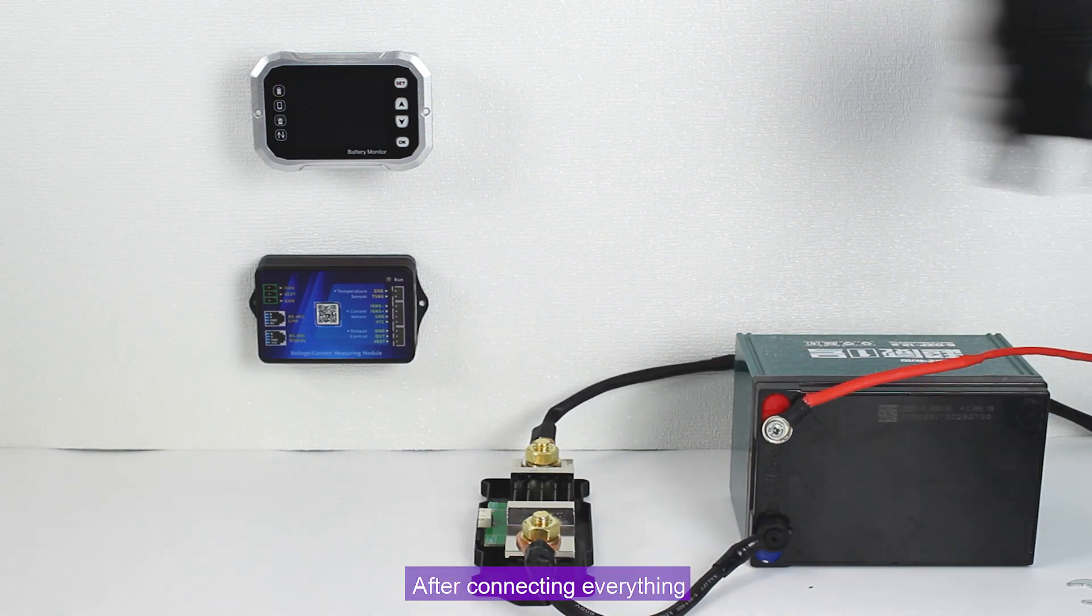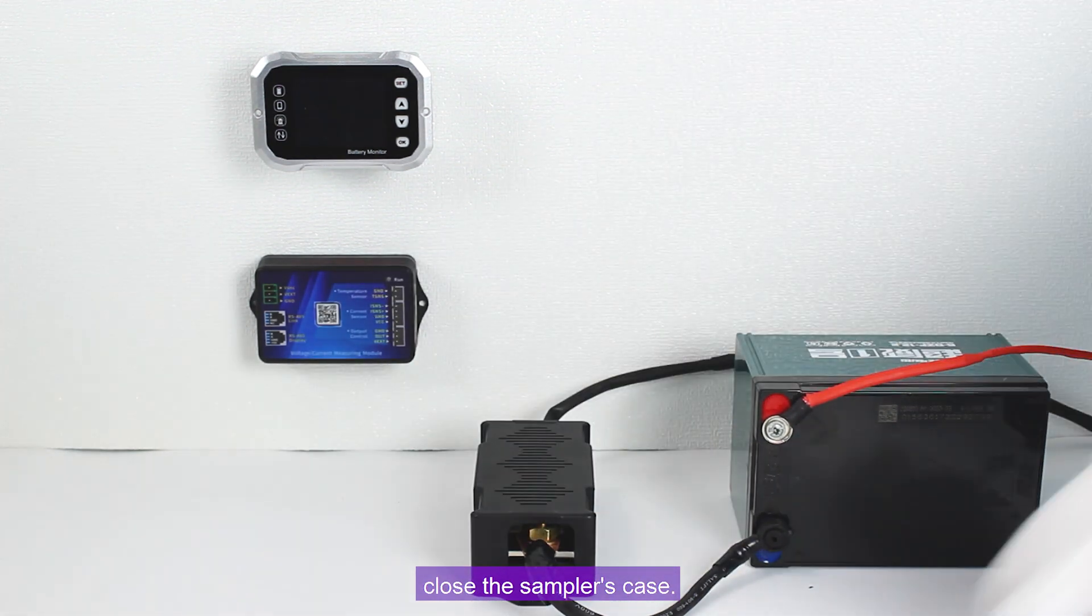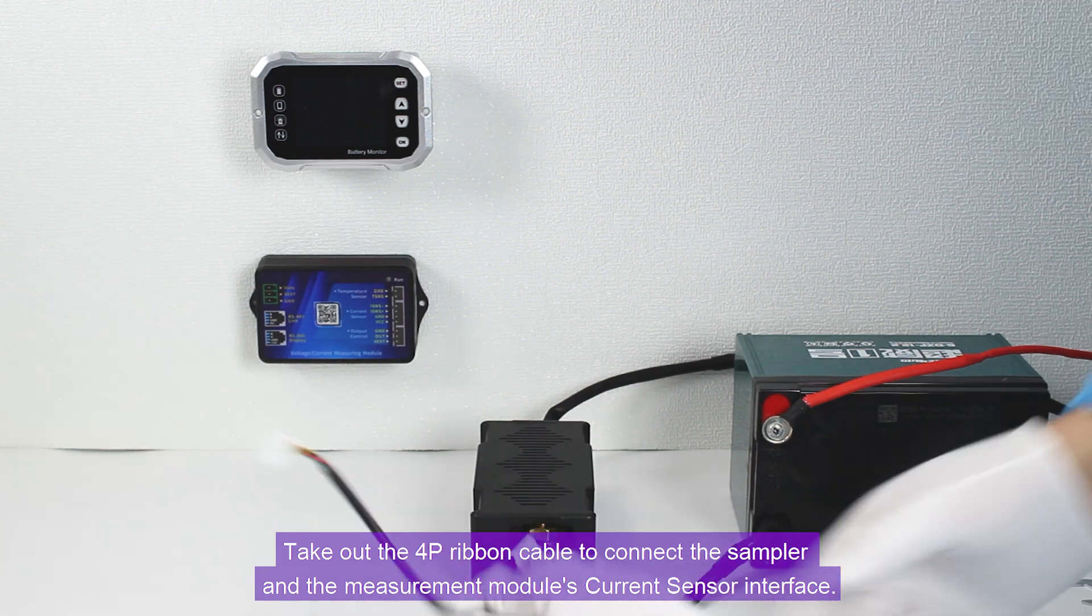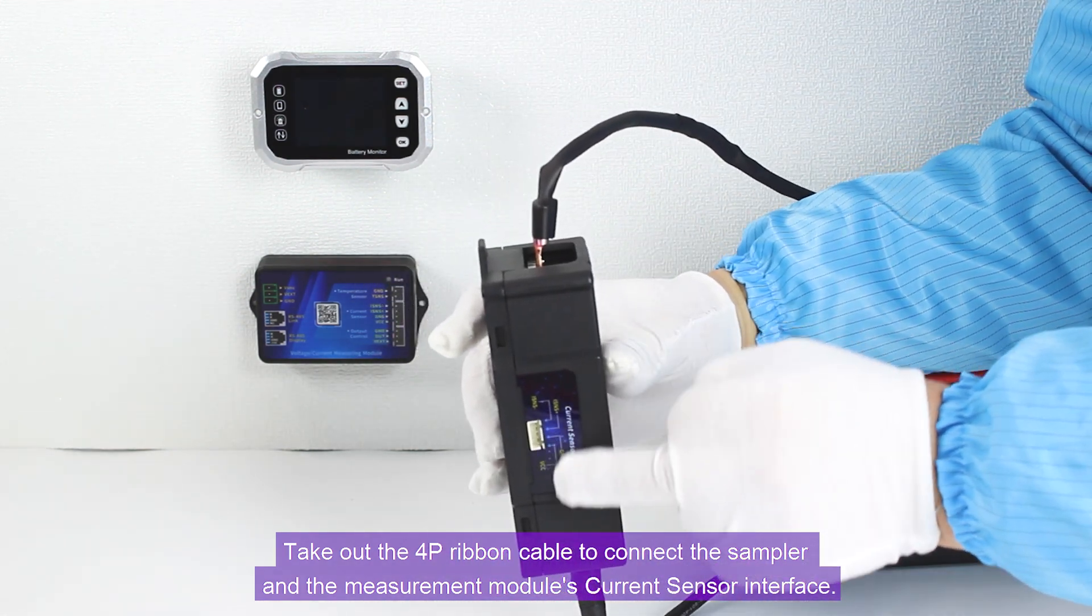After connecting everything, close the sampler's case. Take out the 4P ribbon cable to connect the sampler and the measurement module's current sensor interface.